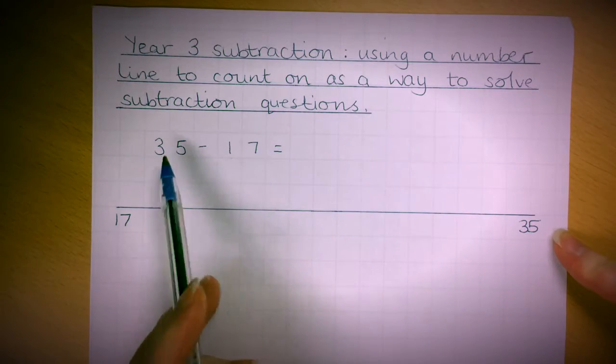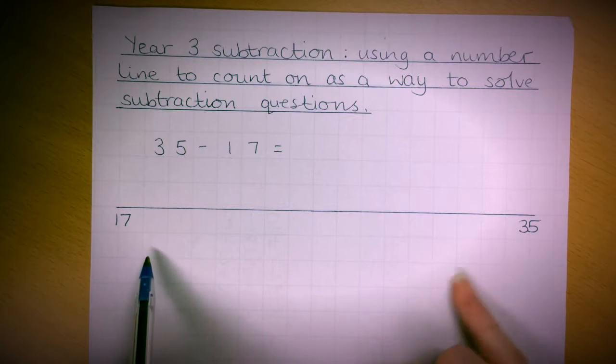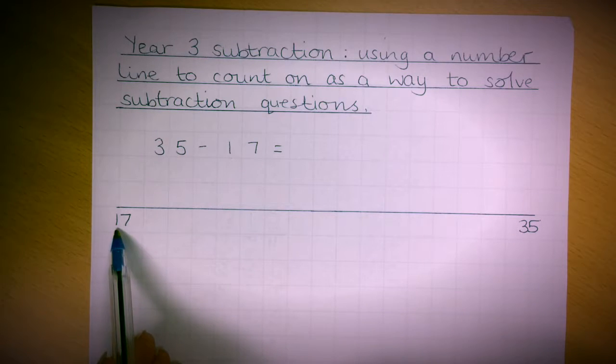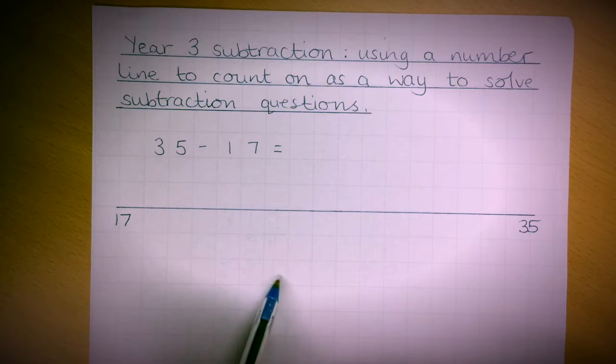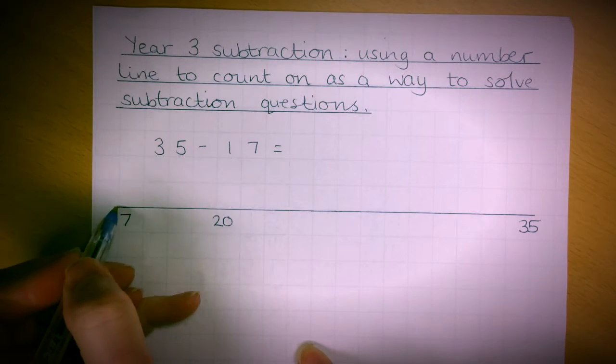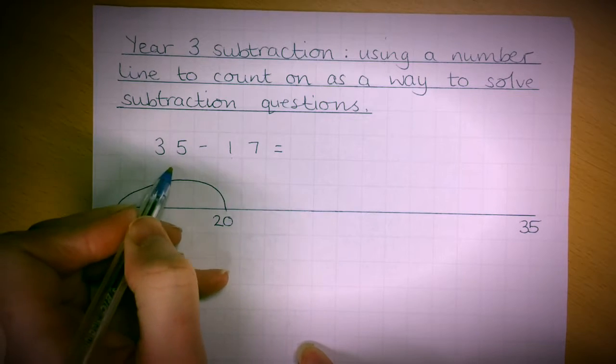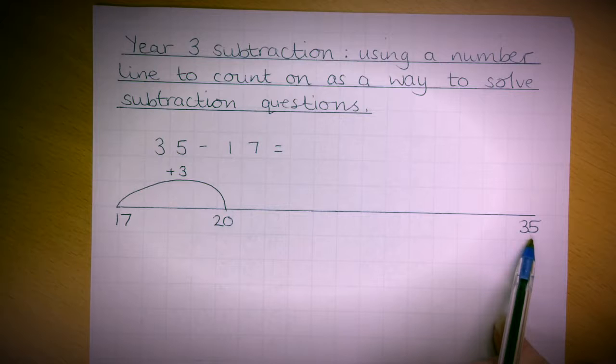I encourage the children to do jumps they're comfortable with. The first thing I would do is get to the next ten after 17, which is 20. To do that, I'll need to jump and add on 3.